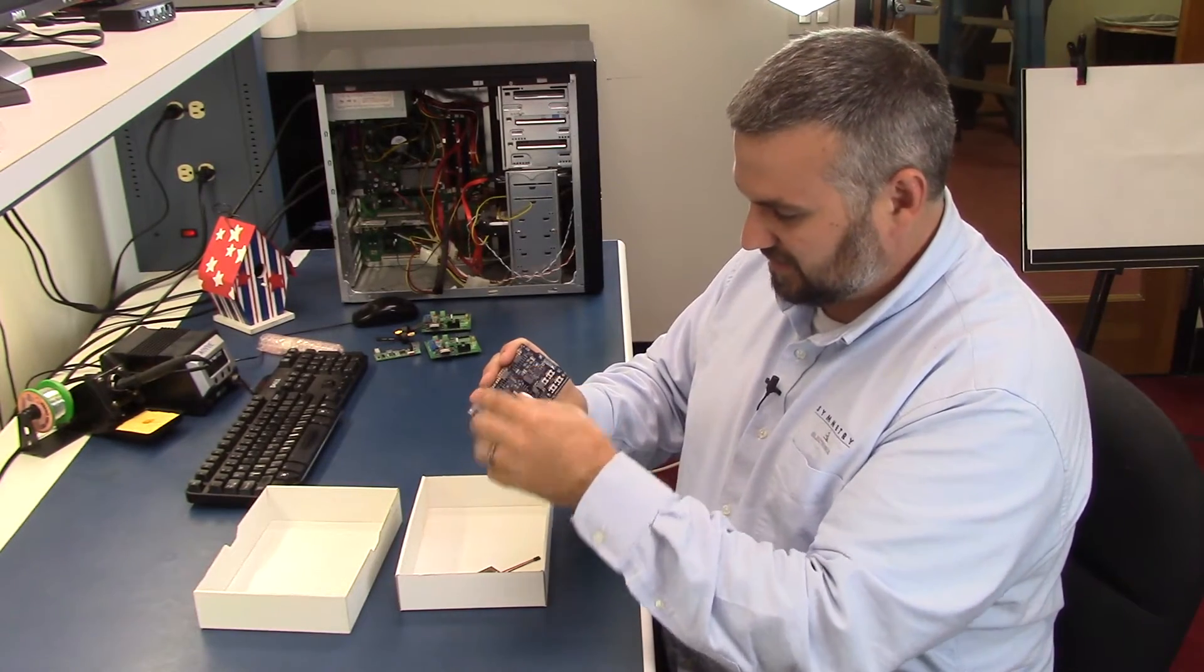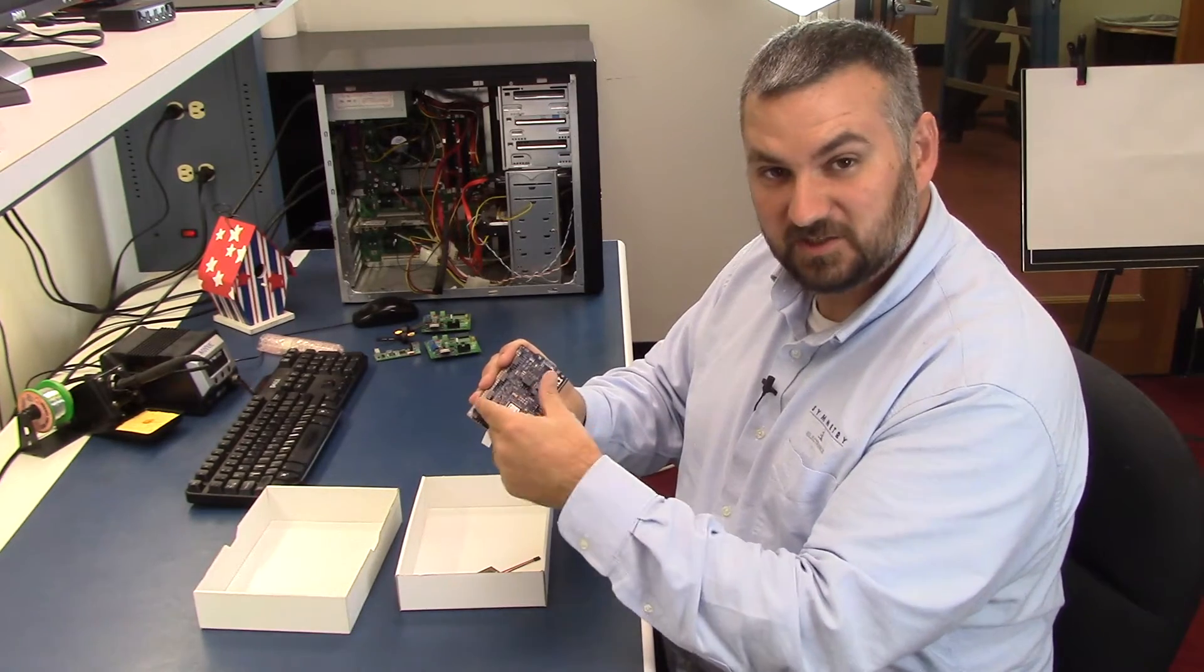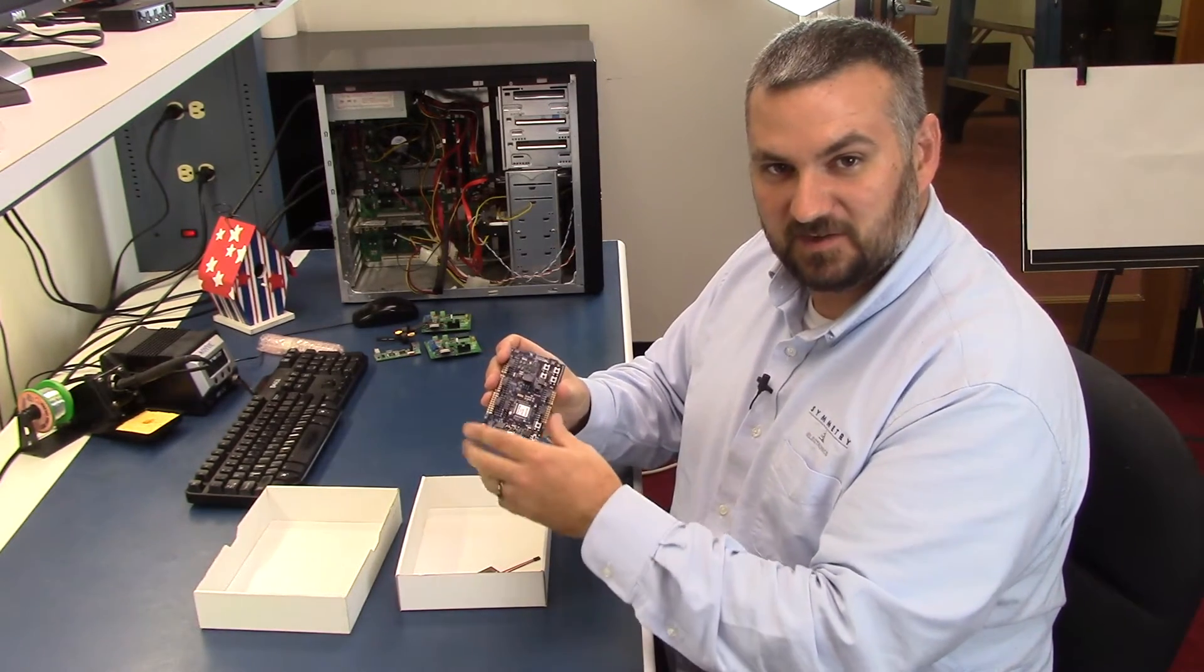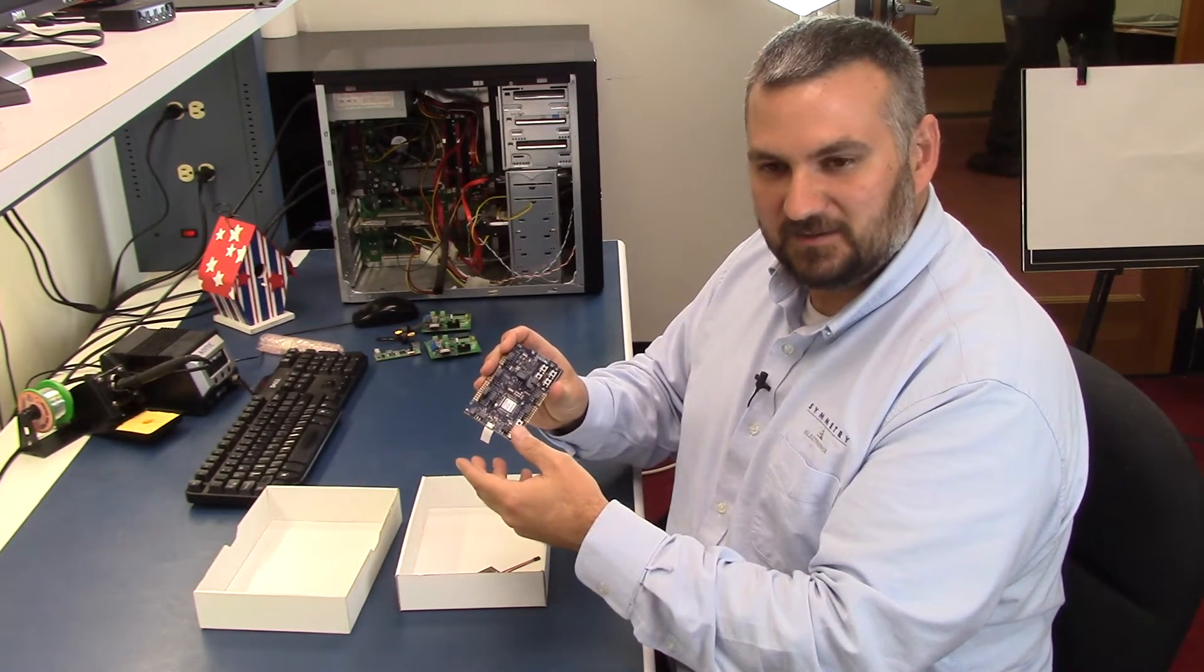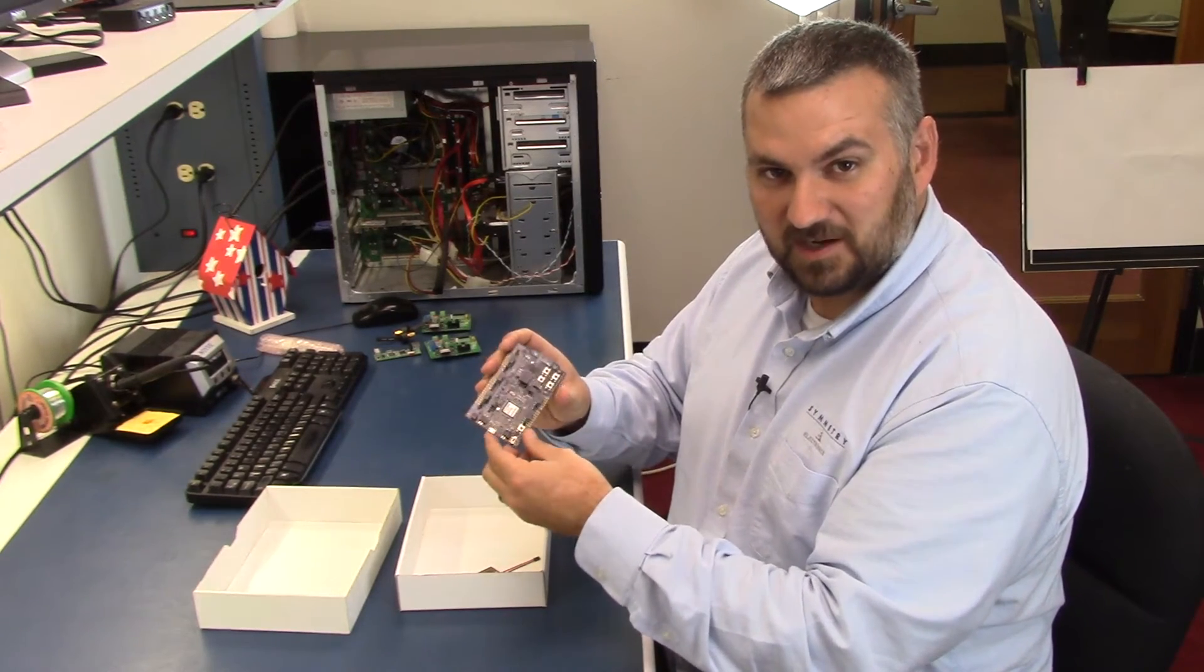These connectors up here, you can use Arduino UNO shields with this, and it also has three different types of Bluetooth protocols. You've got smart Bluetooth, ANT, as well as a proprietary Bluetooth with this one.